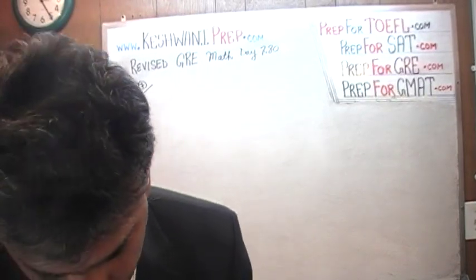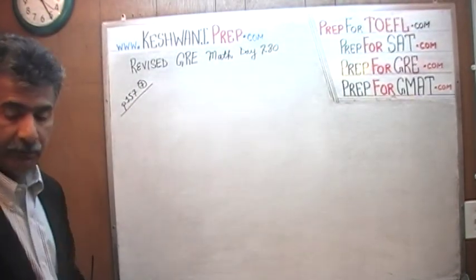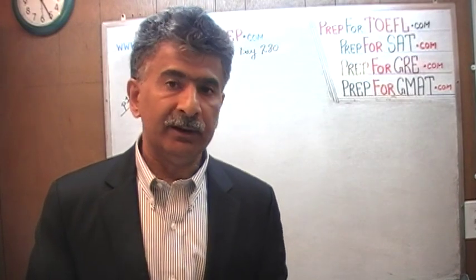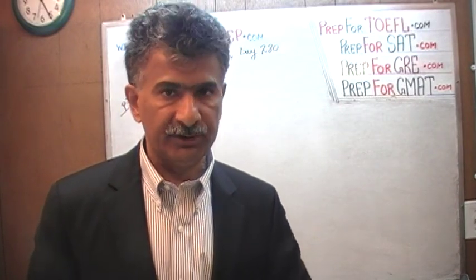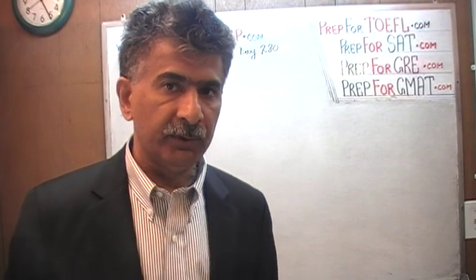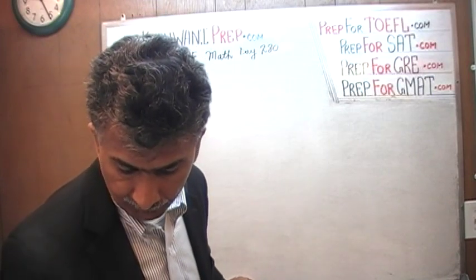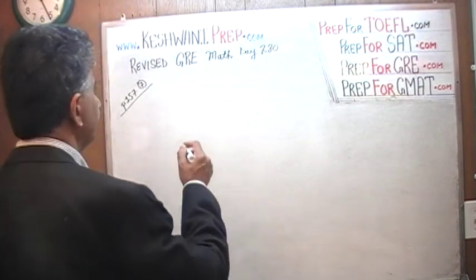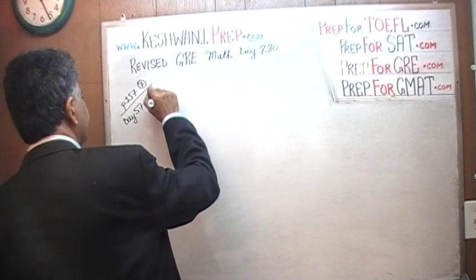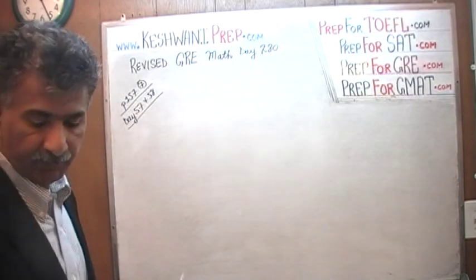The problem we are about to solve is on page 157, problem number 7 — the very first problem on that page. All the problems on page 157 are the exact same problems that appeared on the same page in the first edition of the revised GRE. We have already solved all of these problems and are just redoing them at a faster pace. If you need more help, you can watch the original video from day 57 and 58, where we did the same problems at a slower pace.